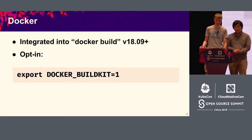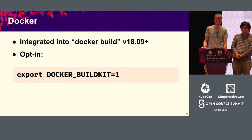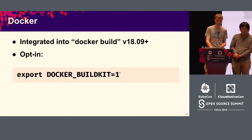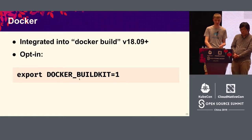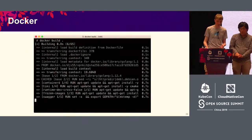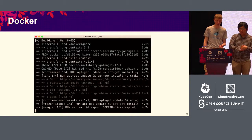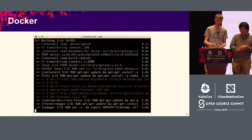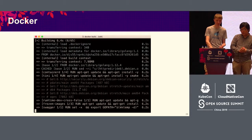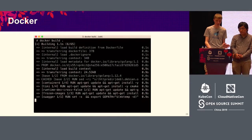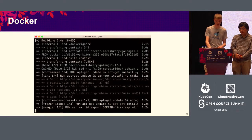BuildKit is integrated into Docker build since version 18.09, so it's in the current stable version. We don't have Windows support yet, so that's why it's opt-in. You need to define the environment variable DOCKER_BUILDKIT=1. Once you do that and run Docker build again, your output will switch to the new BuildKit output. You'll see stuff running in parallel, see how much time it takes, and know that you're now using BuildKit. All the flags are the same and the migration should be very smooth.